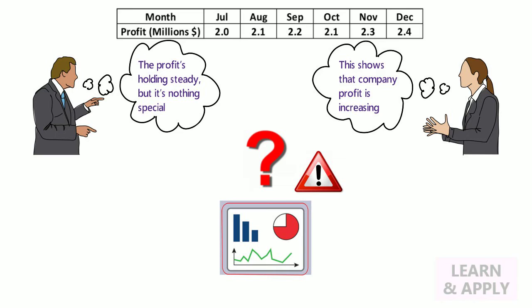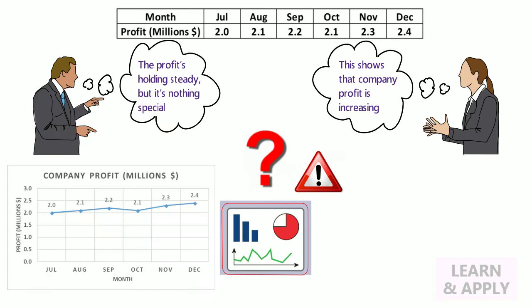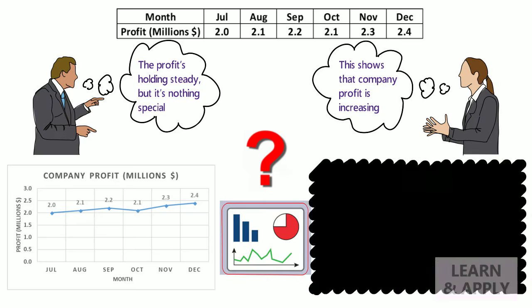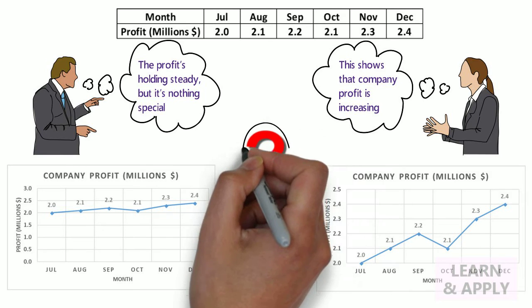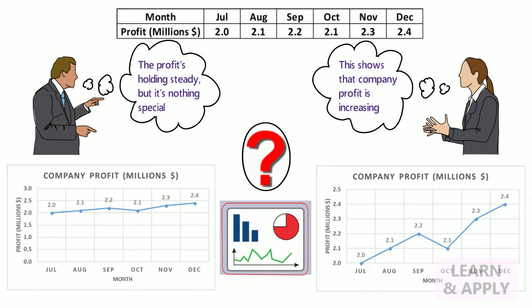But you need to be careful because even the simplest chart can be used to finally mislead and misdirect you. Here are two time graphs showing a company's profit for six months. They are both based on the same information. So, why do they look so different? They give drastically different versions of the same information.